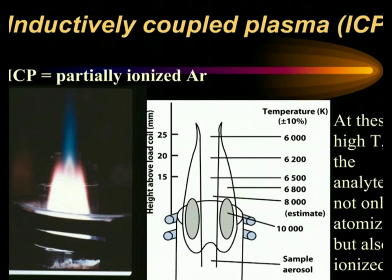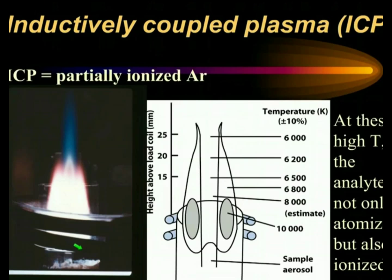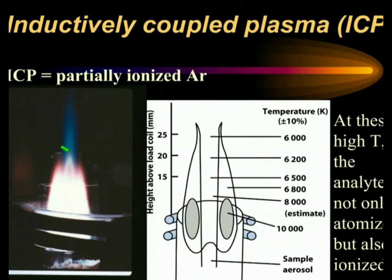So what is an ICP? It's a partially ionized gas — you see a picture here of an ICP, an argon plasma. It's an electrolytic discharge, and the sample is introduced into it through what is called an injector, in the form of an aerosol. As the aerosol moves up in the plasma, it undergoes desolvation, vaporization, atomization, and ionization. This is exemplified here using cerium in solution, whose atoms and oxide emit in the red, and the ions emit in the blue.